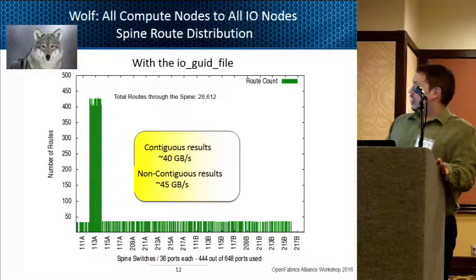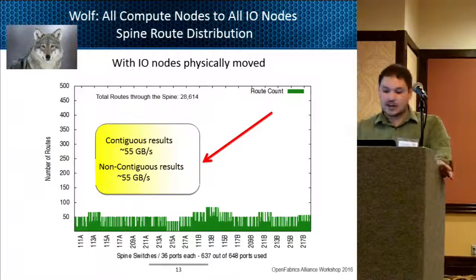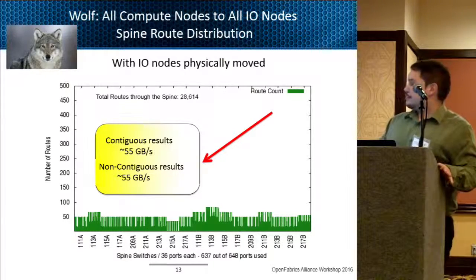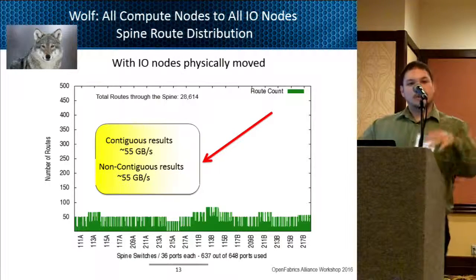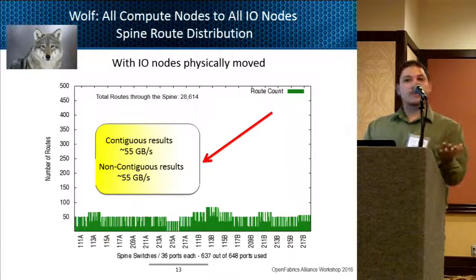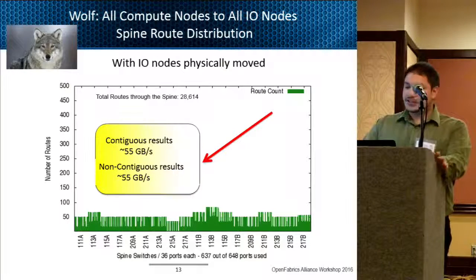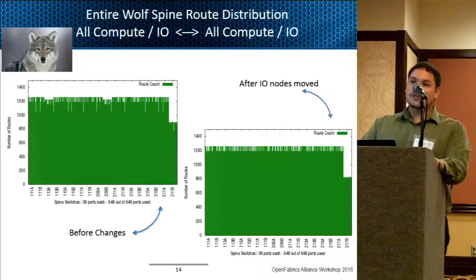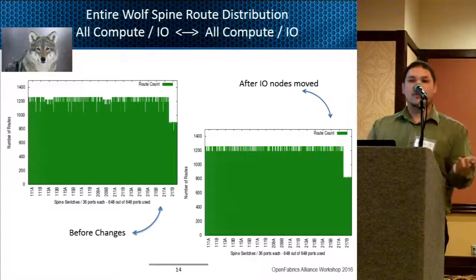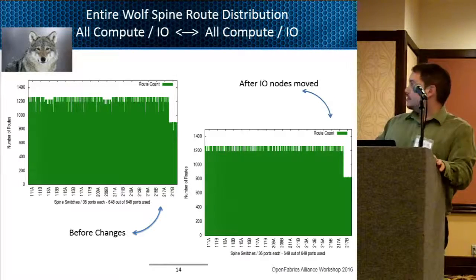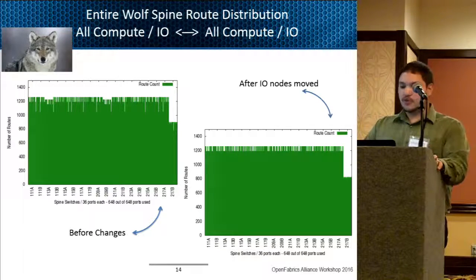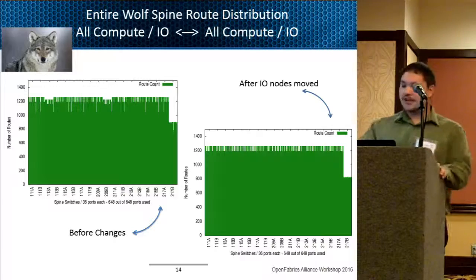We did one more test: remembering that all IO nodes were on the same port on the 24 different line cards, we physically moved the IO node placement on those leaf/line cards into randomized ports on the fabric. The result was that from the compute nodes to all the IO nodes, the routes looked much better and more symmetric — not all going through a few ports on one spine but spread out across all of them. That's when we saw better performance numbers between contiguous and non-contiguous allocations. Notably, after the IO node movement, the overall general routing table on the fabric pretty much stayed the same even though compute-to-IO-node routes improved tremendously.